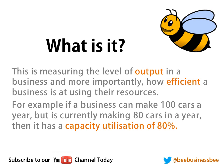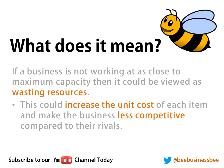Capacity utilization is a measure of the output in a business — it measures how efficient a business is at using its resources. For example, if a business can make 100 cars a year but currently only makes 80, then its capacity utilization is 80%, meaning 20% of their resources are going to waste.